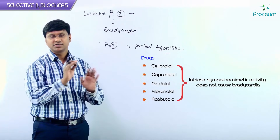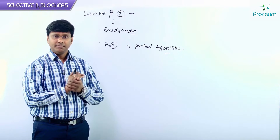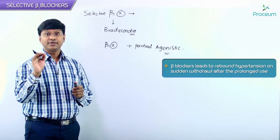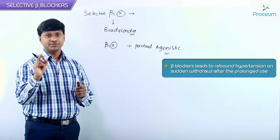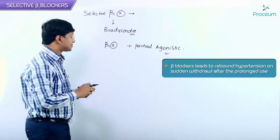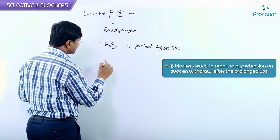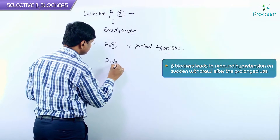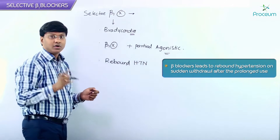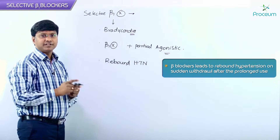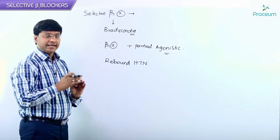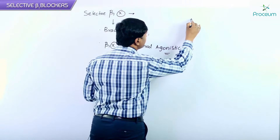Remember, all beta blockers can lead to rebound hypertension on sudden withdrawal after prolonged use. This is an important problem to keep in mind with all beta blockers.